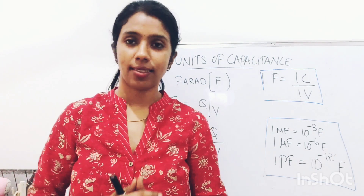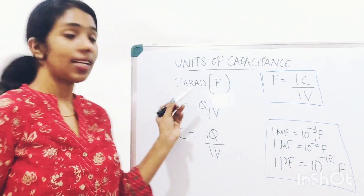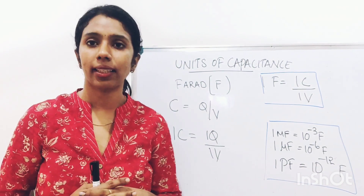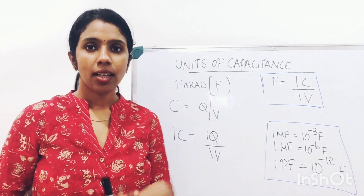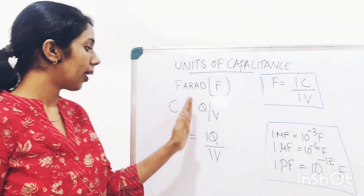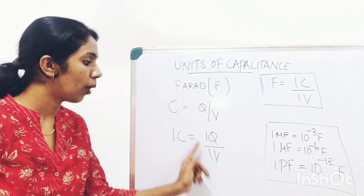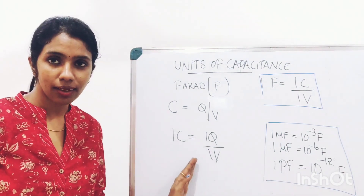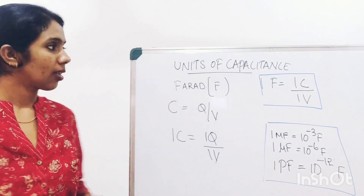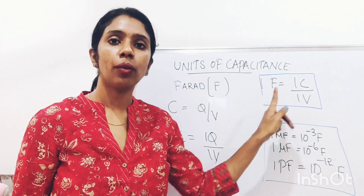Units of capacitance. The SI unit of capacitance is the Farad, named after the famous scientist Michael Faraday. According to the equation C = Q / V, 1 Farad equals 1 Coulomb divided by 1 Volt.